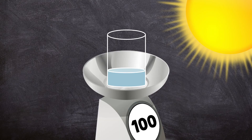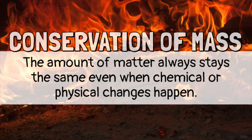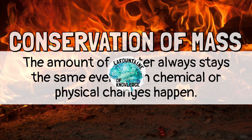Eventually the water in the glass heats up and evaporates into water vapor. That water vapor still has a mass of 100 grams. The law of conservation of mass says that the amount of matter always stays the same, even when chemical or physical changes happen.